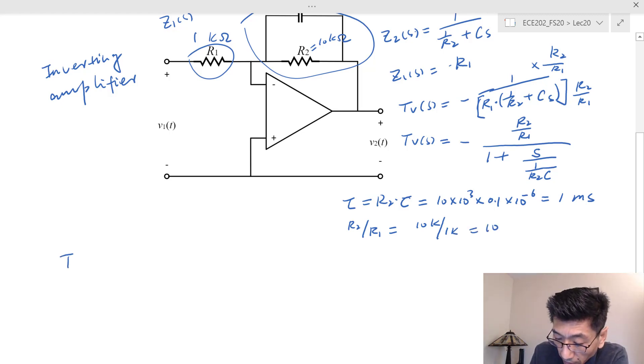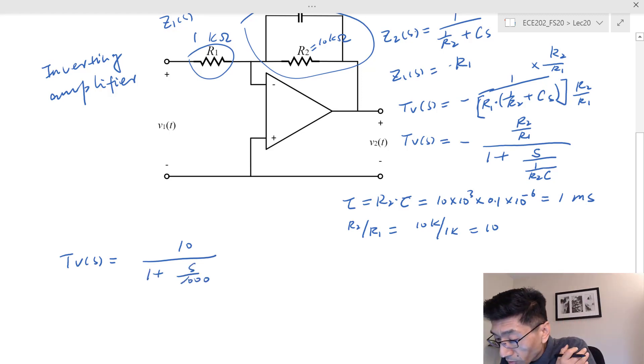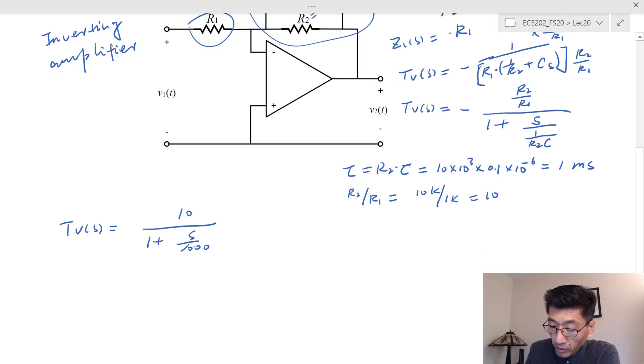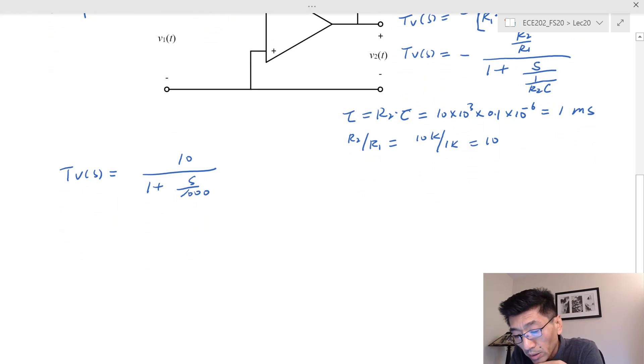R2 over R1 equals 10k divided by 1k, so we get 10. Therefore the transfer function TV(s) is just equal to 10 over (1 plus s/1000), because 1 over 1 millisecond is 1000. So this is the transfer function.